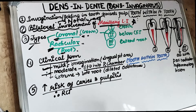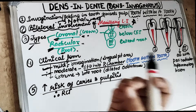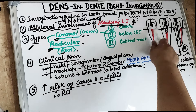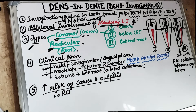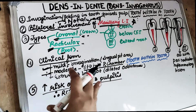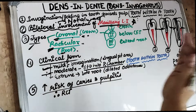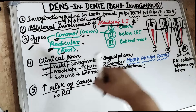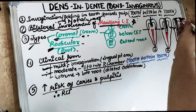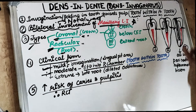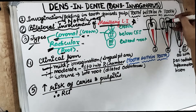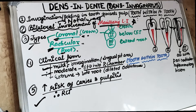Because of this invagination there is thinning of the enamel and dentine. Due to this defective enamel and dentine, infection can easily invade the pulp. There is an increased risk of caries and pulpal involvement — leading to pulpitis, pulp necrosis, periapical cyst, and periapical abscess. As soon as the tooth erupts into the oral cavity, the Dens in Denti provides a path for dental caries to invade, increasing the risk of caries as well as pulpitis.